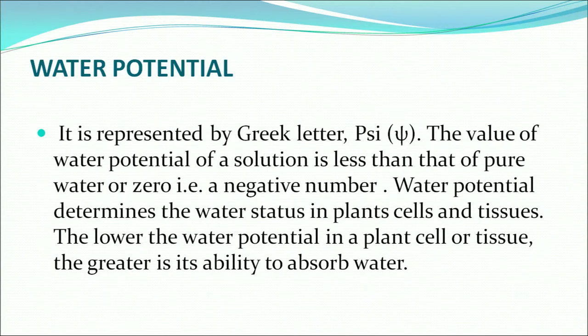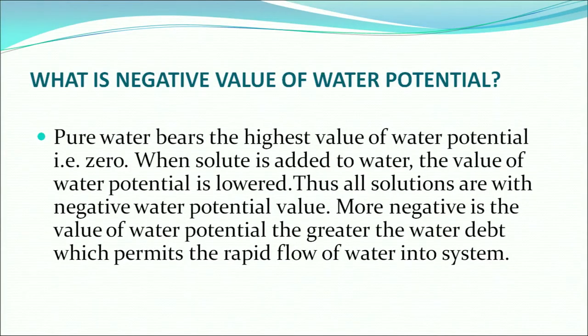Water potential determines the water status in plant cells and tissues. The lower the water potential in a plant cell or tissue, the greater is its ability to absorb water. All solutions have lower water potential. Pure water has the highest value of water potential, which is zero. When solute is added to water — when you are making any solution — the value of water potential becomes lower. Thus all solutions have a negative water potential value. The more negative the value, the greater the water deficit, permitting rapid flow of water into the system.